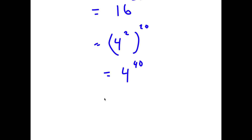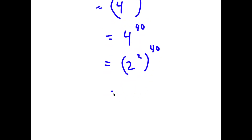Now 4 is the same thing as 2 to the power of 2, so I have 2 to the power of 2 to the power of 40, which is equal to 2 to the power of 80.